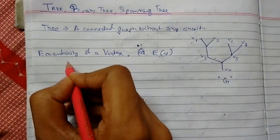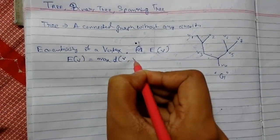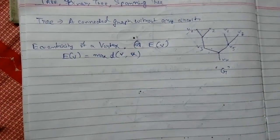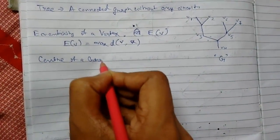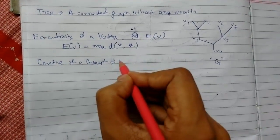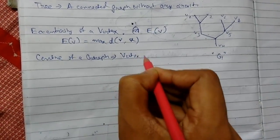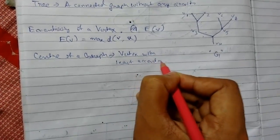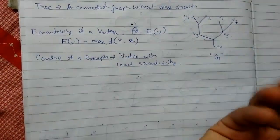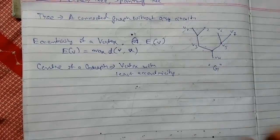Mathematically, eccentricity is written as the maximum distance from vertex u to vertex v. Now, the center of a graph: the vertex with the least eccentricity is called the center. Here, v1 and v2 are two centers, and v6 and v7 are also two centers.